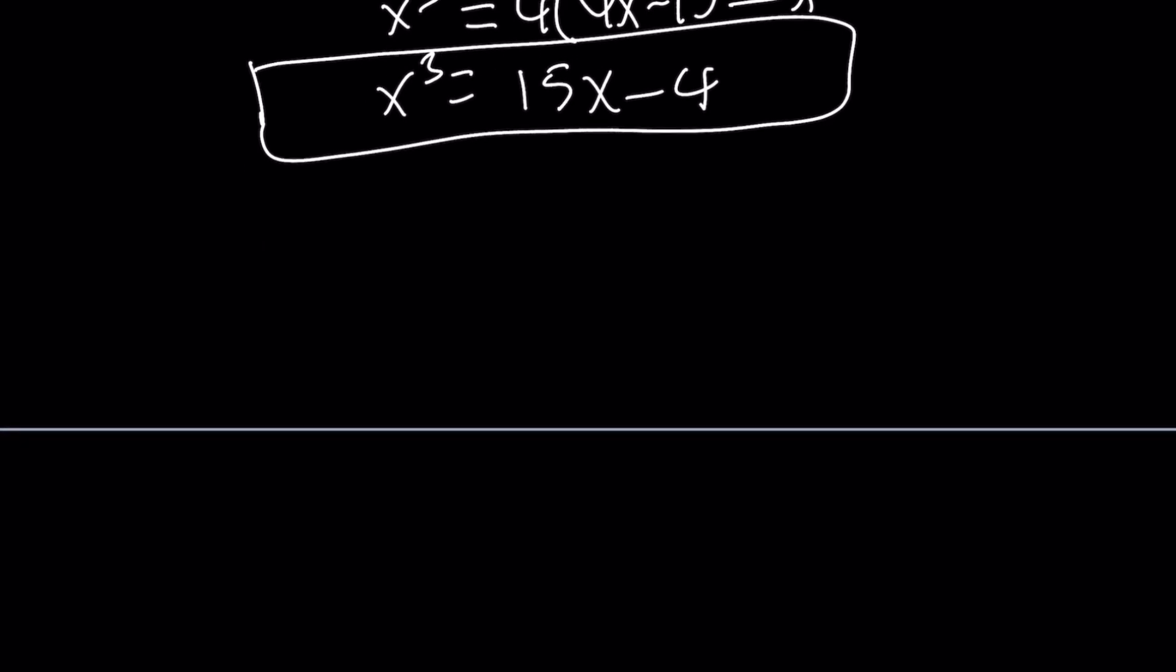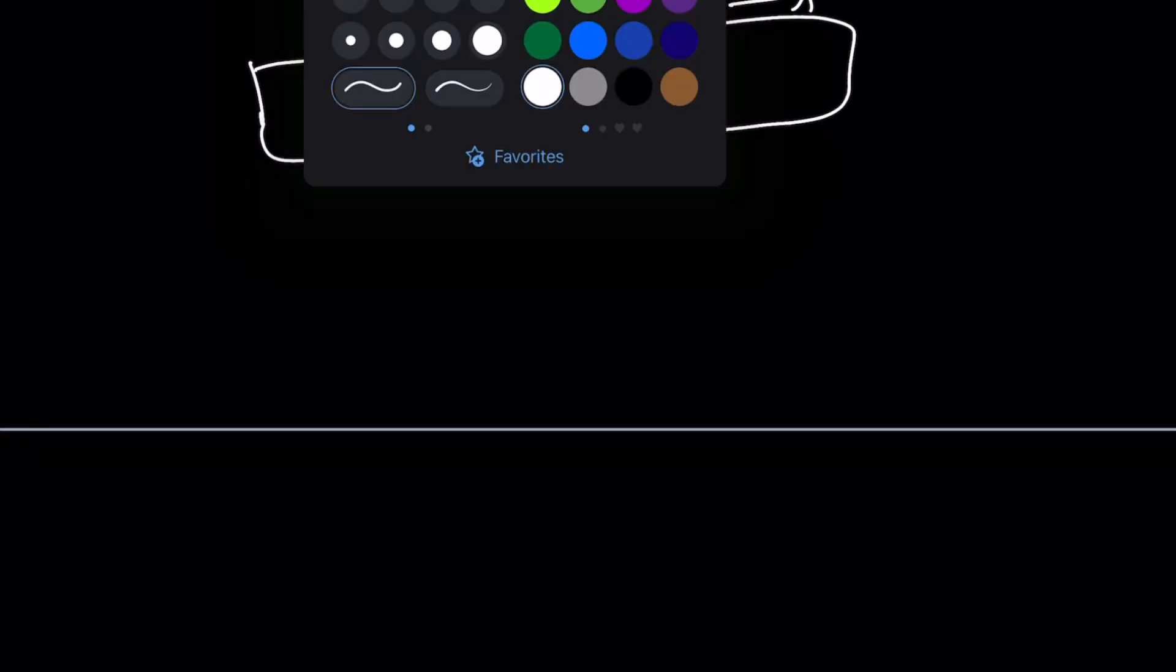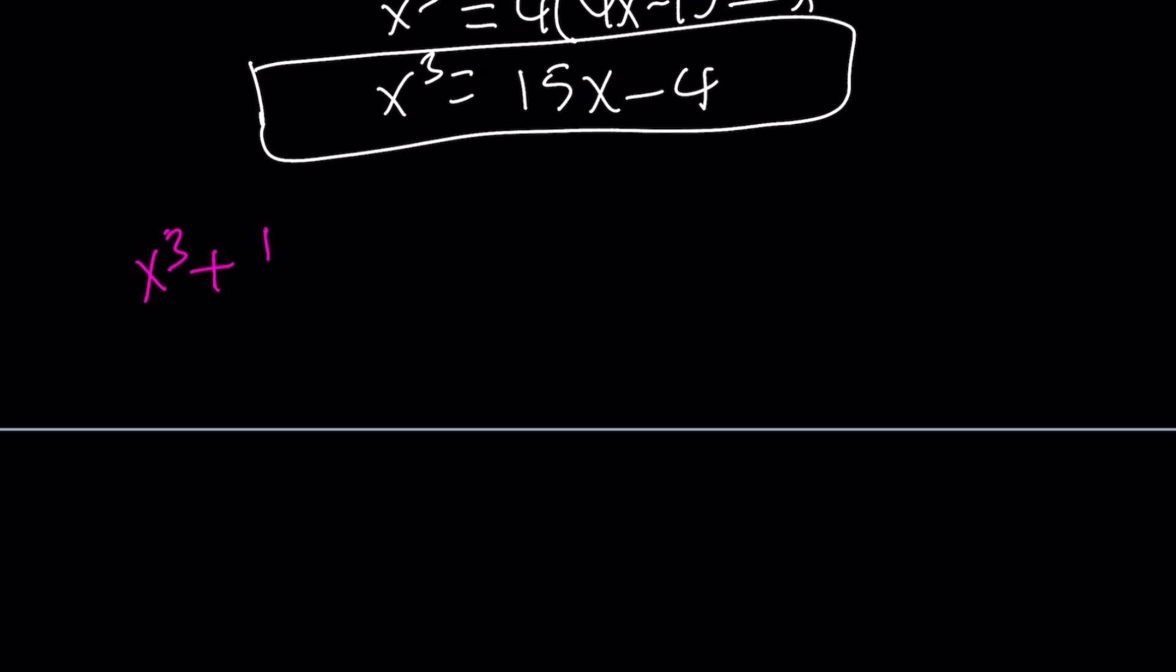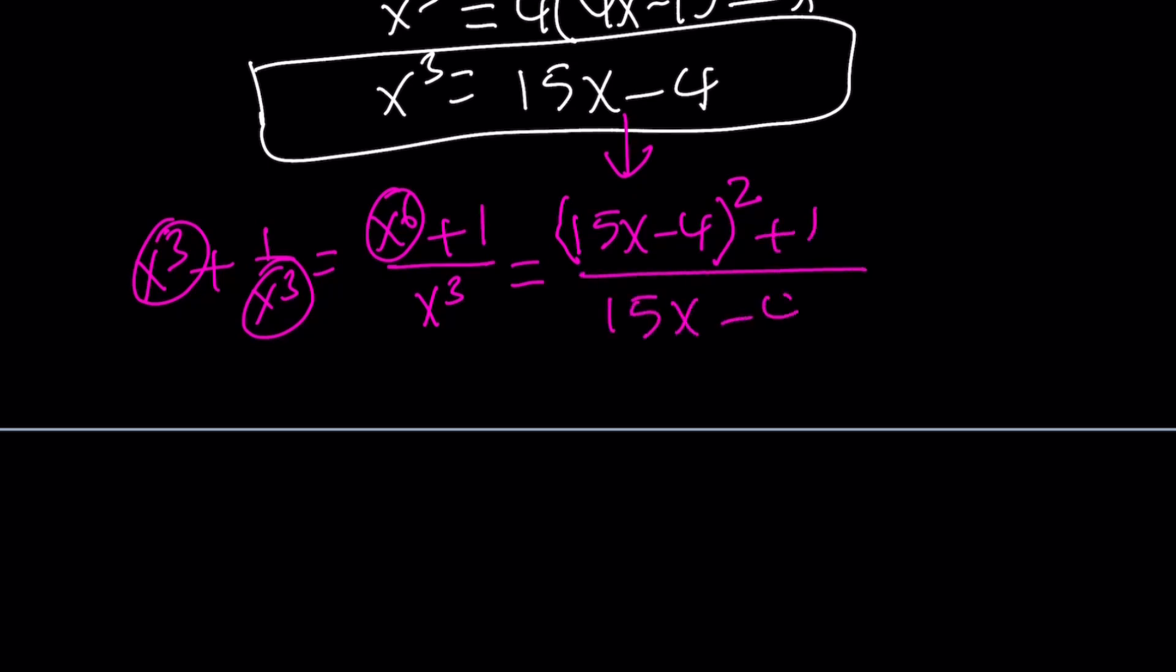We got it for second, we got it for third, and we can continue doing that. Now, I do need x cubed plus 1 over x cubed. So I can replace x cubed with that. But let's go ahead and make a common denominator first. So that's going to give me x to the sixth power plus 1 divided by x to the third. Now, x cubed squared is basically x to the sixth power. So I can write x to the sixth as 15x minus 4 squared, plus 1, and that is divided by x cubed, which can be replaced by 15x minus 4.